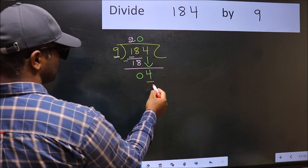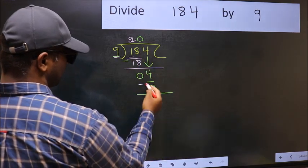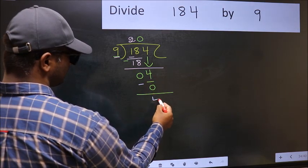So 9 into 0, 0. Now we should subtract. 4-0, 4.